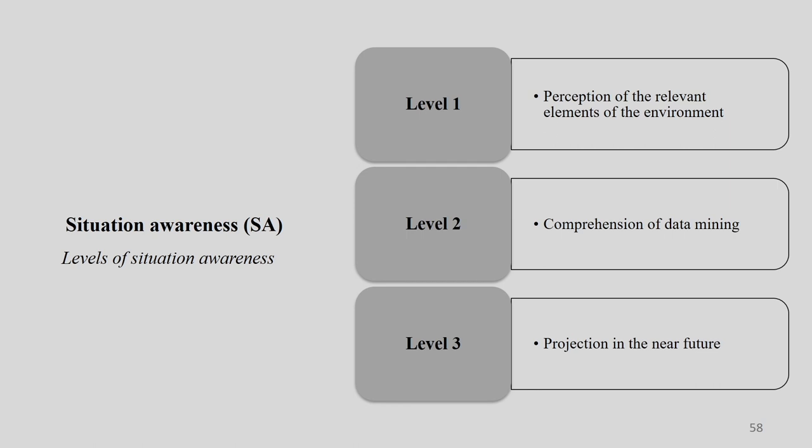The intensity actually increases at higher levels, and these are the levels of situation awareness. If someone is only aware about elements but not in a position to comprehend them, there will always be a chance of error or accident. At the second level, it is possible to comprehend data but not know how to predict what will happen in the near future. If prediction is not possible, the operator will not be able to take precautionary measures if something goes wrong.